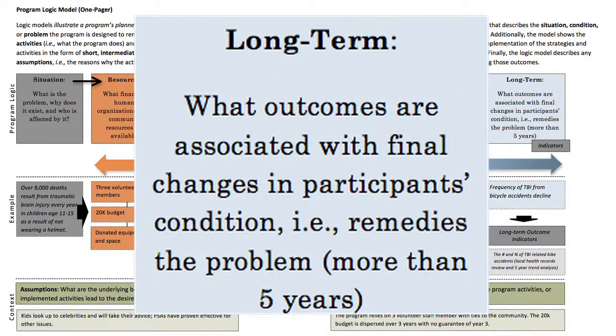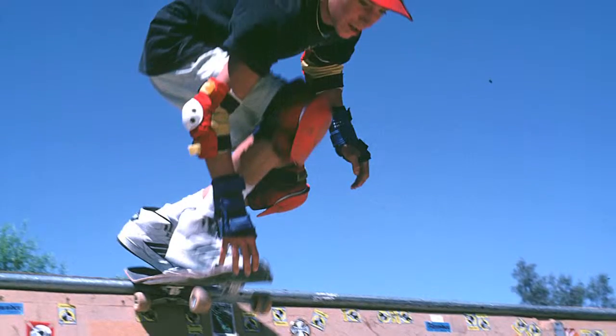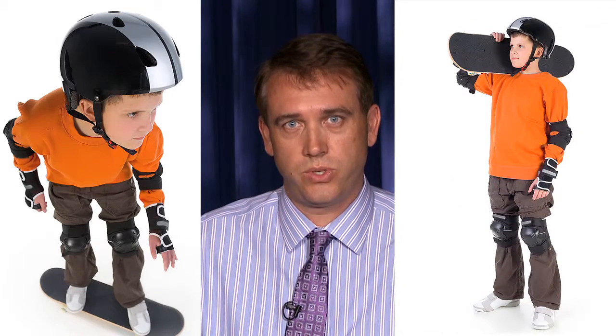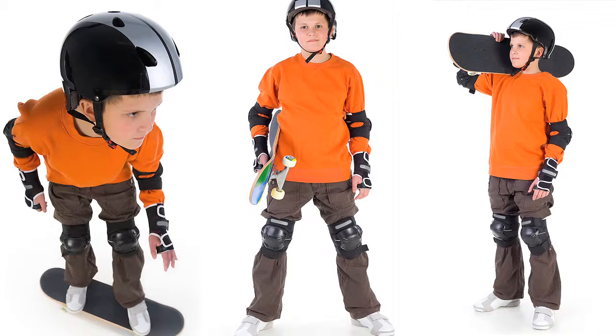One of the major parts of the program logic model is that the activities you're doing lead to the outcomes you've specified. It's very important that the outcomes connect back to the activities and that you have a specific way of measuring whether those outcomes have occurred. In terms of the long-term outcome, it's essential that it remedies the situation you determined at the beginning. In the helmet safety evaluation, more than 9,000 kids across the county have head injuries from not wearing helmets in skate parks, so the long-term outcome is to reduce or eliminate those injuries.